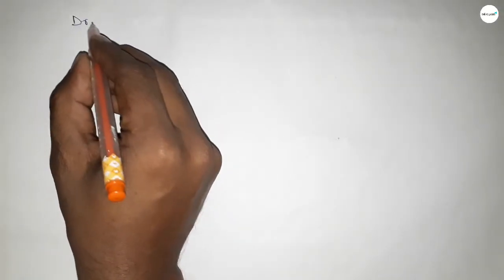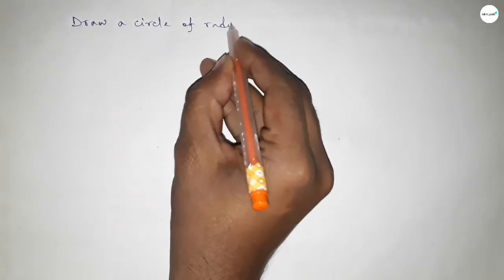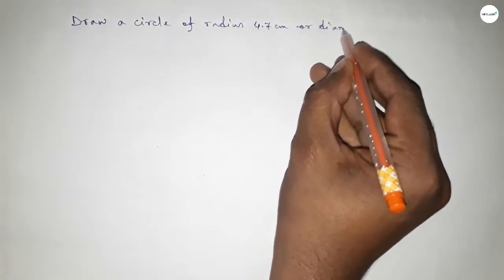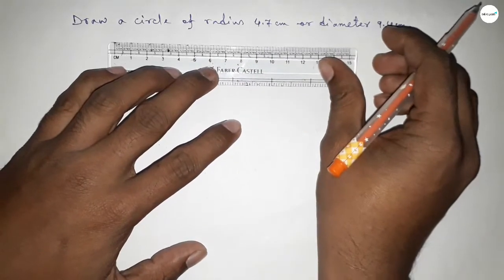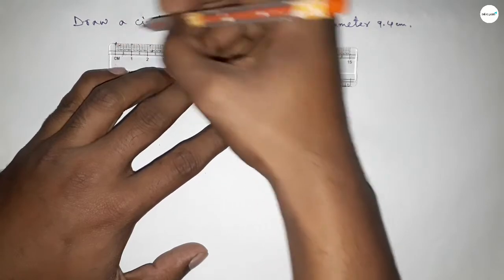Hi everyone, welcome to a size chair classes. Today in this video we have to draw a circle of radius 4.7 centimeter or diameter 9.4 centimeter. So let's start the video. First of all, drawing here the length 4.7.